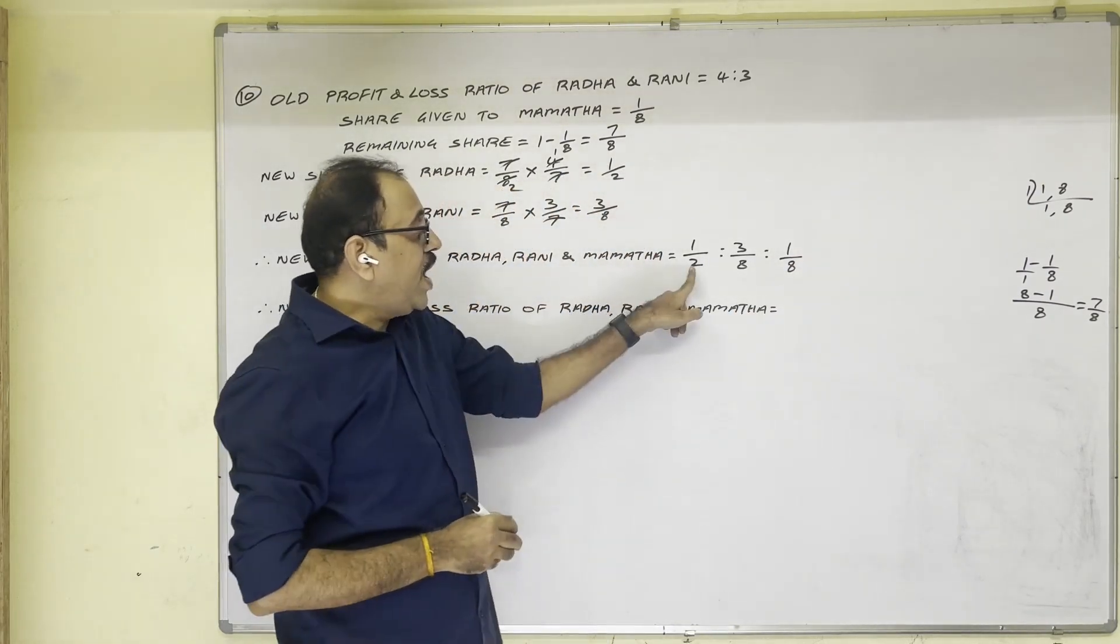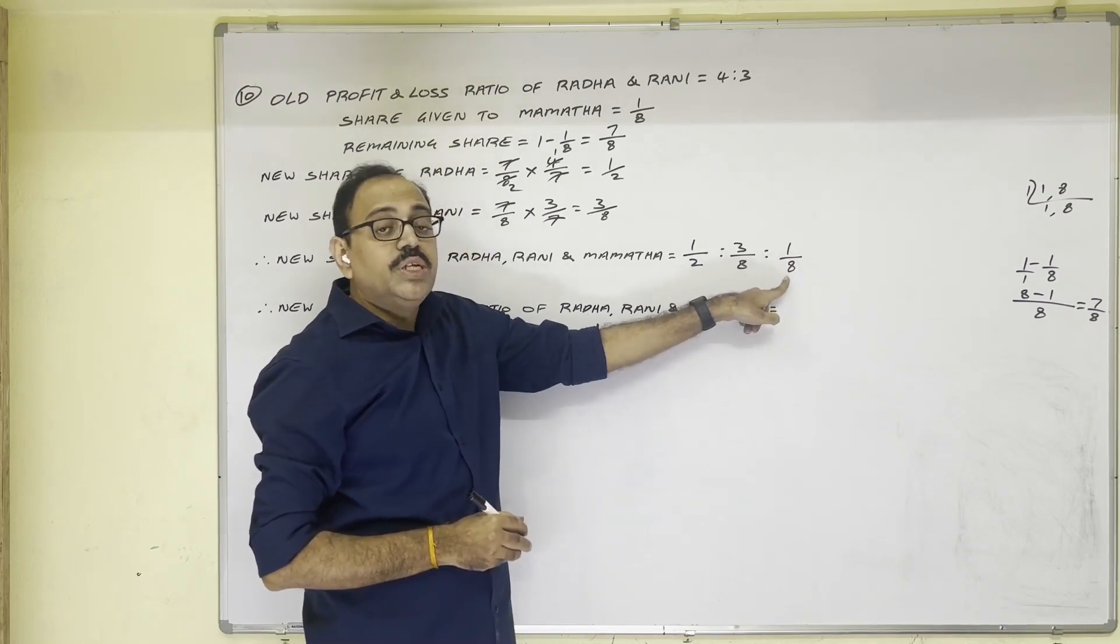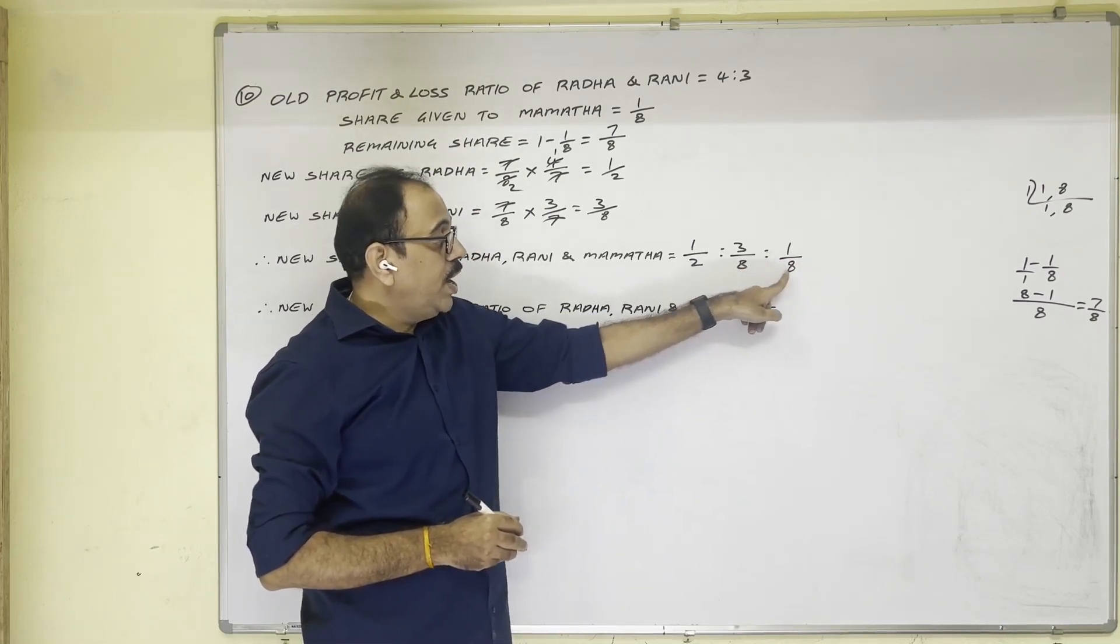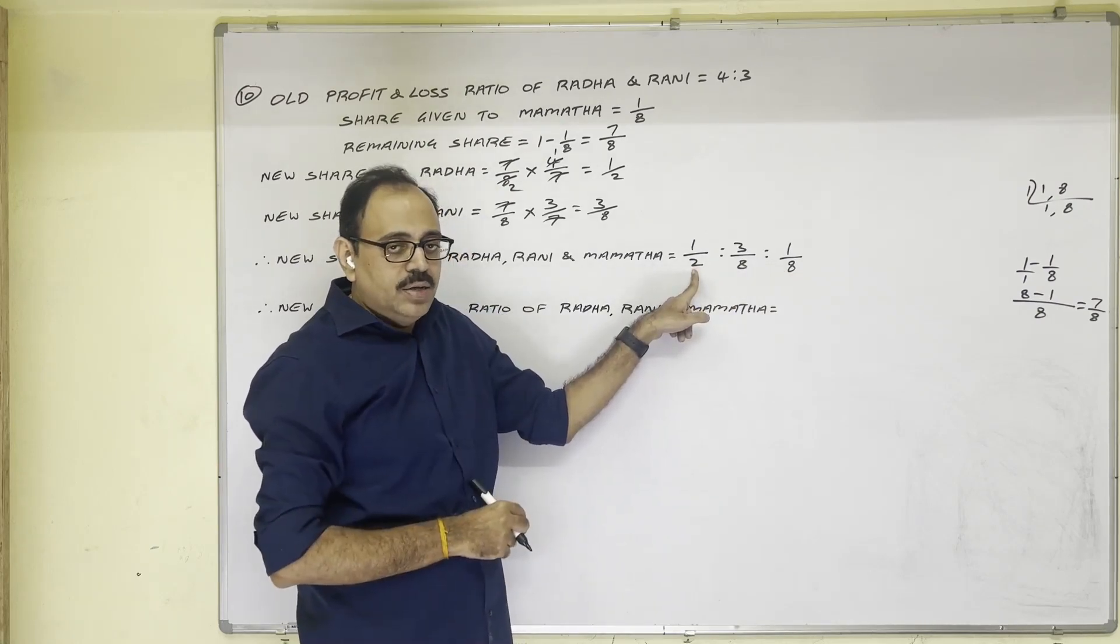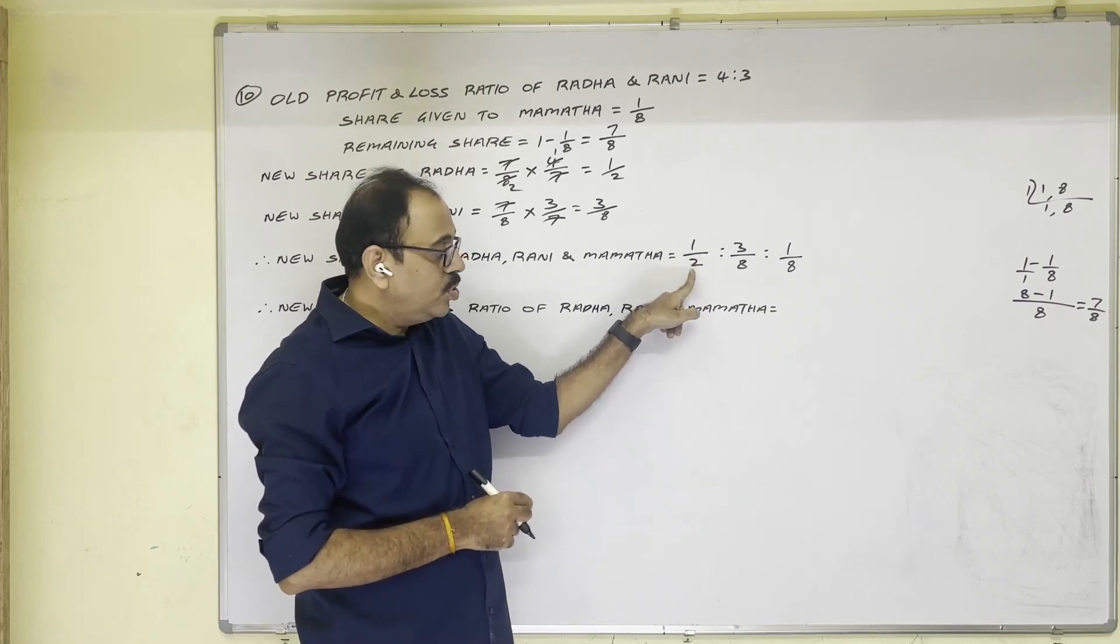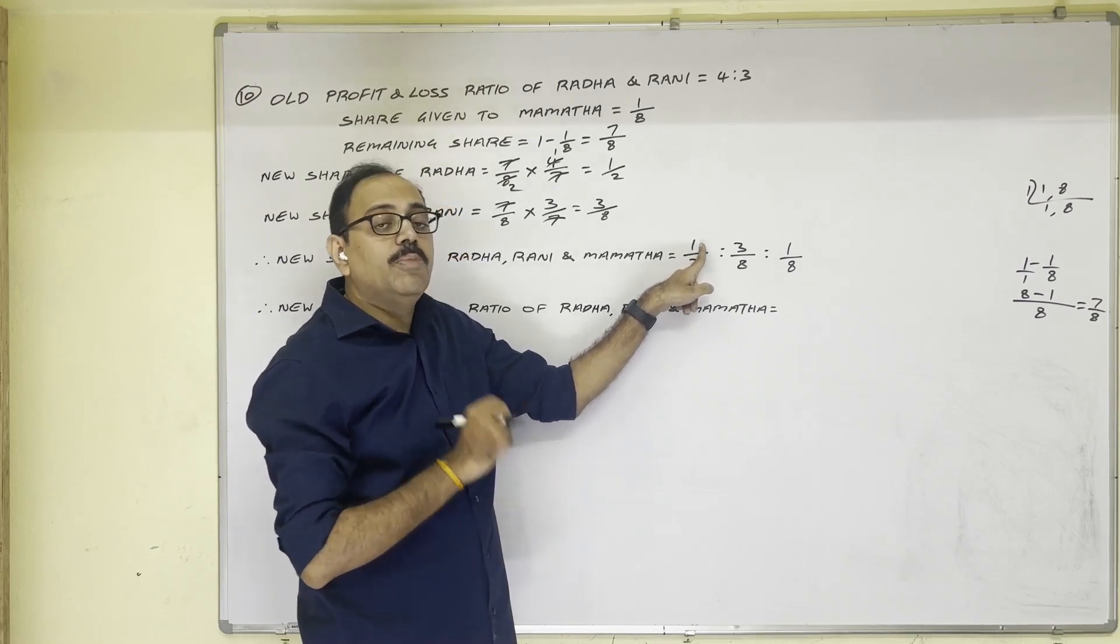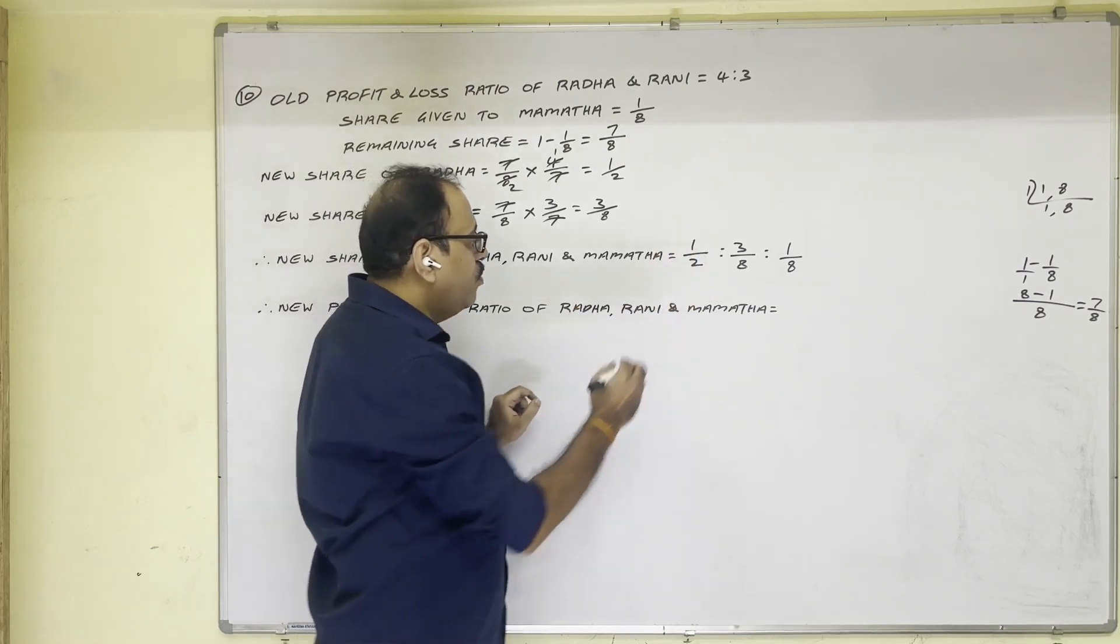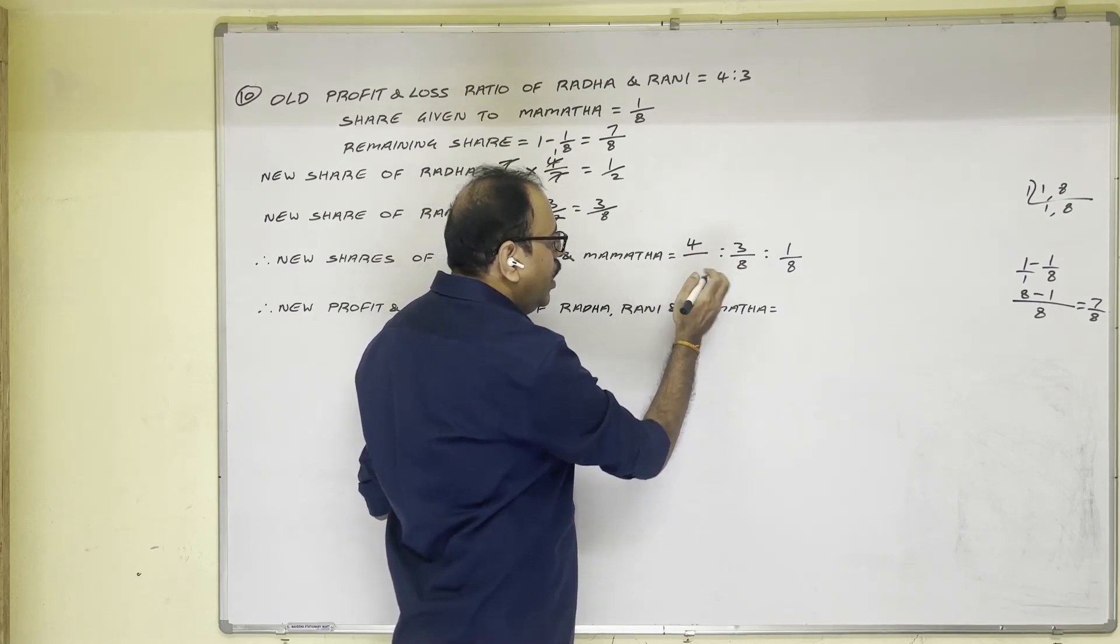When we write the fractions in the form of ratios, denominator should be same. So for this, two, eight, eight. Here also I want eight as a denominator. So with which number we should multiply? Four. Four twos are eight. Not only denominator, numerator also multiply with four. Four ones are four, four twos are eight.